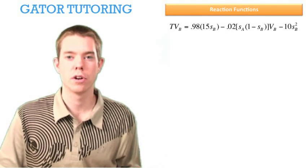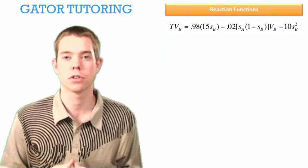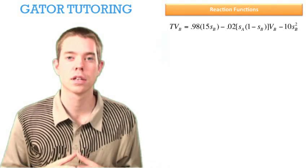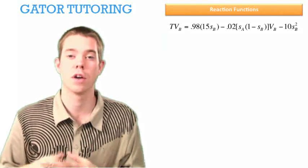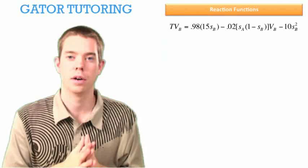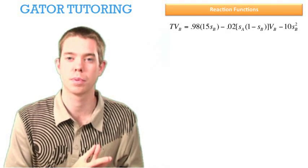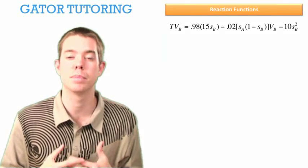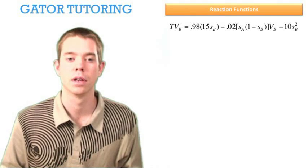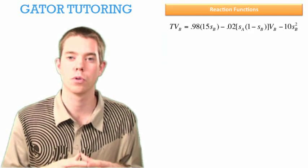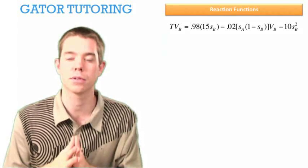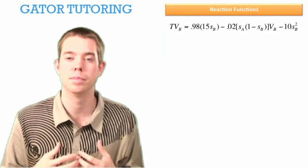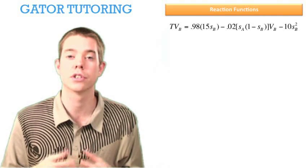Now that we have our total value function for country B, we're ready to find our reaction function. First let's define what is a reaction function. A reaction function tells us the best response given the choice of the other guy. So A's reaction function would tell us A's best response given a choice from B. And we're finding B's reaction function, which tells us B's best response given any choice from A. To find a reaction function, we start with a total value function. So if we're going to find B's reaction function, we need to start with B's total value function, take the derivative with respect to SB, set it equal to 0, and solve for SB.